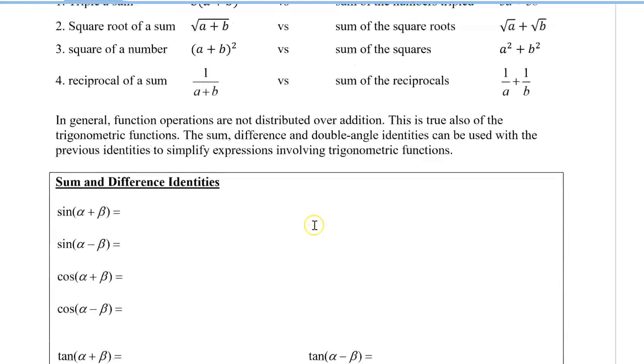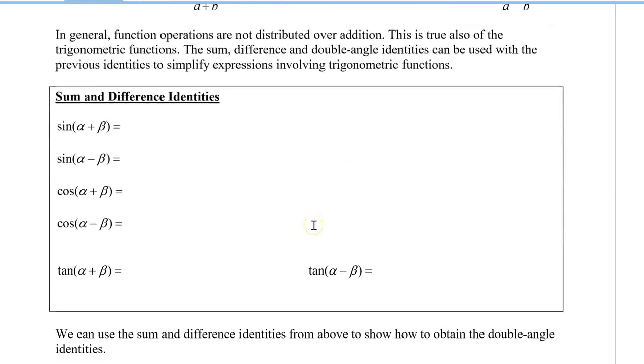There are six identities here, based on sine, cosine, and tangent. I'm going to write them down, and you can copy them down as well.